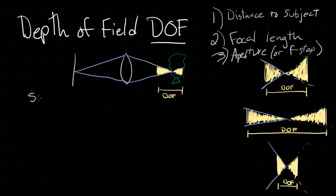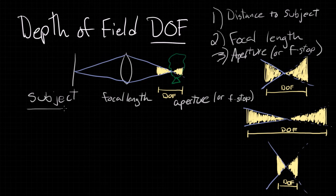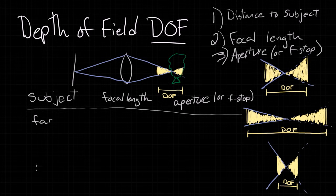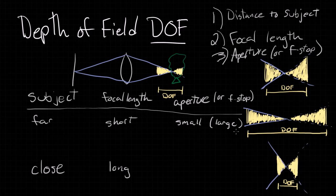So we have three methods: subject distance, focal length, and aperture (or f-stop). If we want a wide depth of field, we want our subject far; for a shallow depth of field, we want our subject close. For a wide depth of field, we want a short focal length; for a shallow depth of field, we want a long focal length. For aperture: if we want a wide depth of field, we want a small aperture — which means a large f-stop; if we want a shallow depth of field, we want a large aperture — which means a small f-stop.